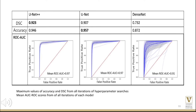We observed that the pre-trained UNET++ models performed the best with a mean DICE coefficient of 0.92, a pixel accuracy of 0.95, and an AUCROC of 0.97. This was followed by the UNET models, with a DICE coefficient of 0.91, a pixel accuracy of 0.96, and an AUCROC of 0.97. DenseNet models showed comparatively decreased performance, with a DICE coefficient of 0.73, a pixel accuracy of 0.87, and an AUCROC of 0.91.